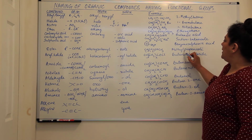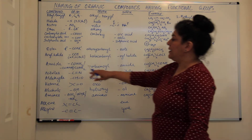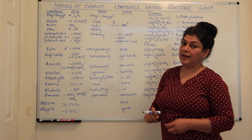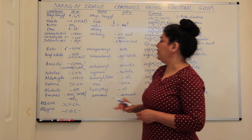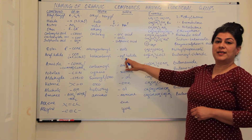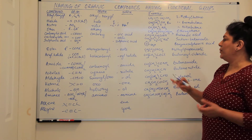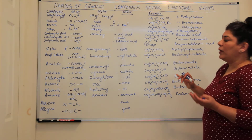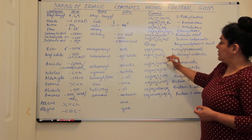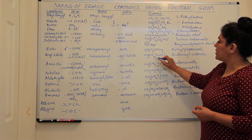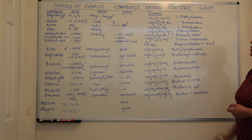Next are acyl halides. Acyl halides are COX, where X represents fluorine, chlorine, bromine, or iodine. As a suffix it is written as 'oyl chloride' if chlorine, 'oyl bromide' if bromine. So COBr would be oyl bromide. For example, counting the carbons with COCl as the first carbon: one, two, three, four — this is butanoyl chloride.